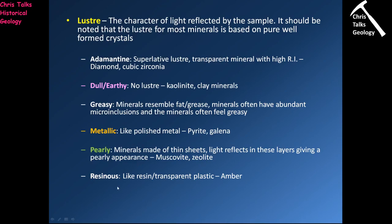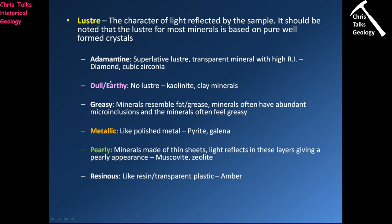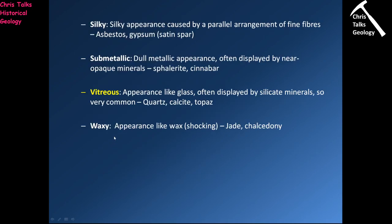Adamantine, greasy and resinous lusters won't be discussed in detail, nor will silky, submetallic or waxy. But arguably the most common of all lusters is vitreous. If you can't classify a mineral as earthy, metallic or pearly, you'll likely classify it as vitreous, because most silicates have vitreous lusters — and since silicates make up the vast majority of minerals, chances are it's a silicate. Even non-silicates like calcite, the most common carbonate mineral, also have a vitreous luster.